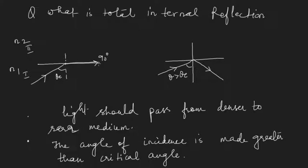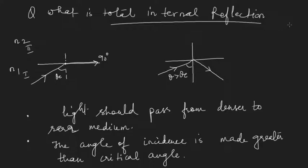If the angle of incidence is more than the critical angle, the light totally internally reflects. Another condition is that the light should move from denser to rarer medium. If these two conditions are fulfilled, we get total internal reflection. Now we will see how light propagation inside the fiber is based on this principle.